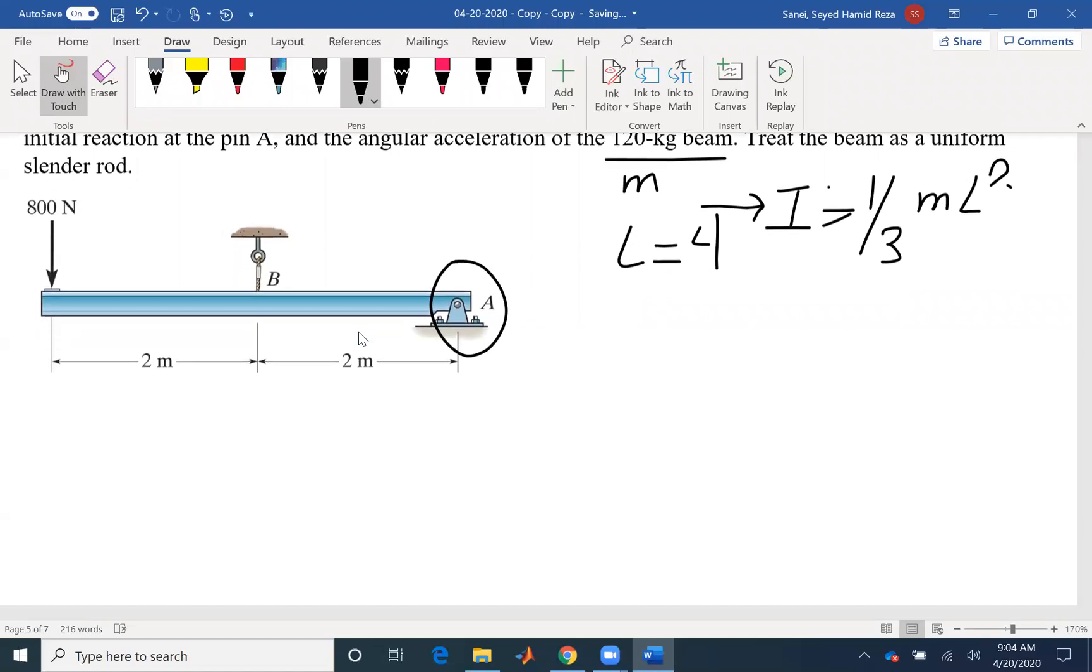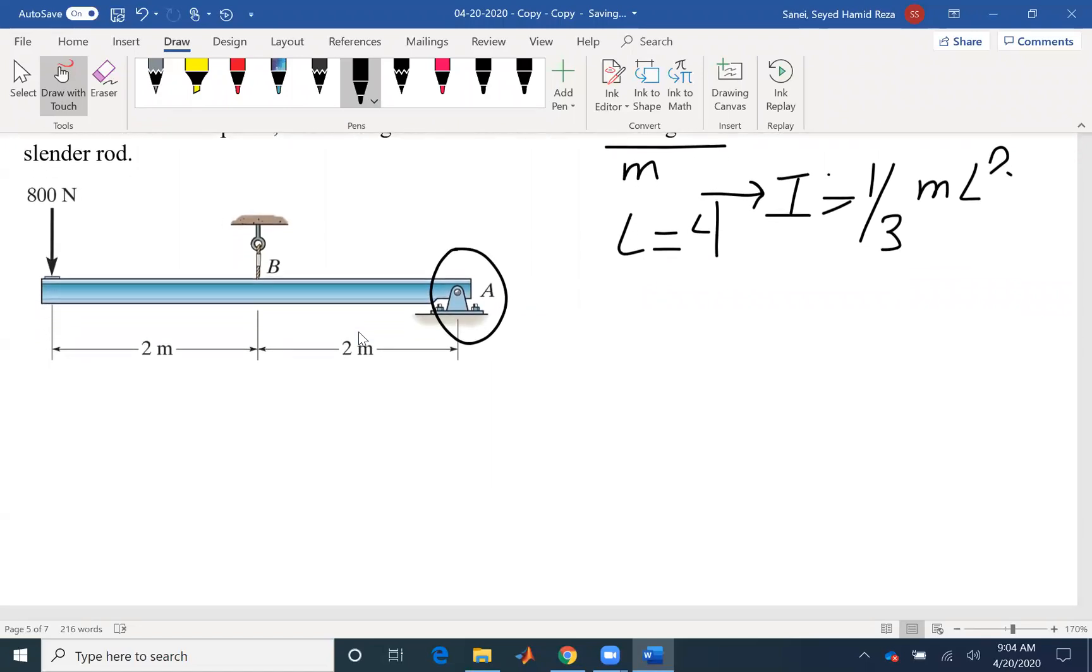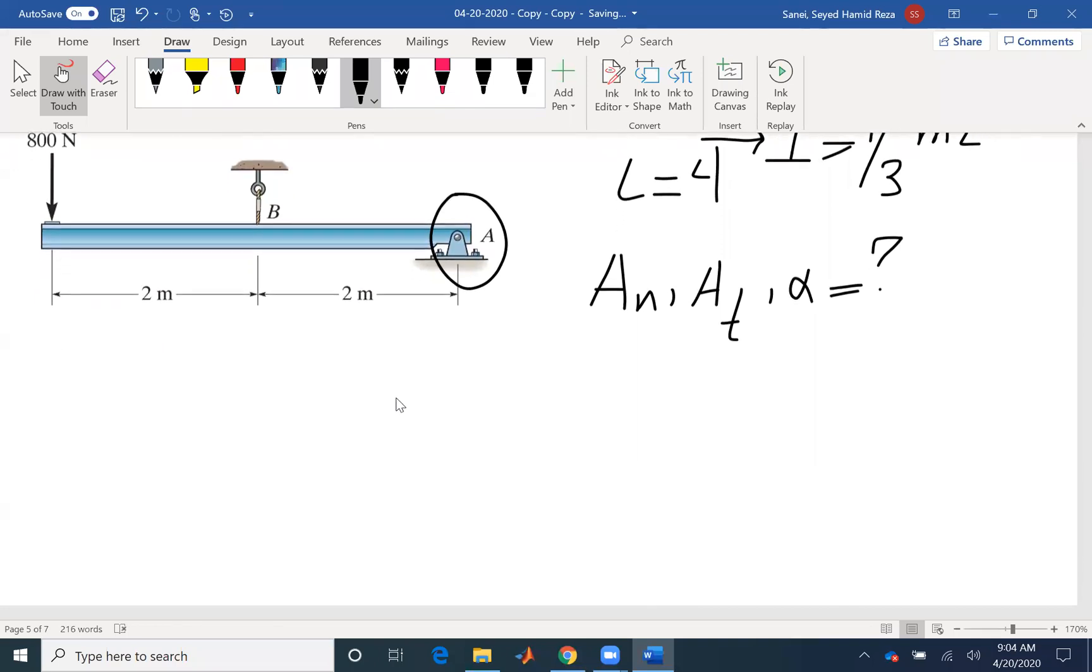The problem is asking for reaction forces. I'm going to call it A_N and A_T in relation to alpha. The first step is to draw a free-body diagram for our beam.